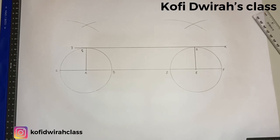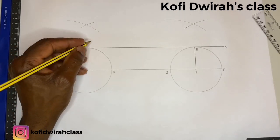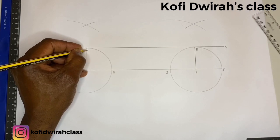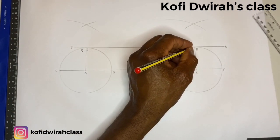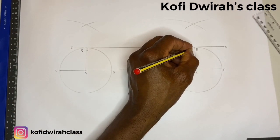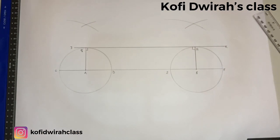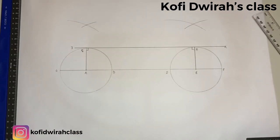This is how to construct a common external tangent to two equal circles. The angle here is 90 degrees — the angle between the normal and the tangent is 90 degrees.